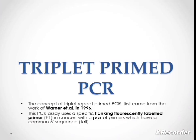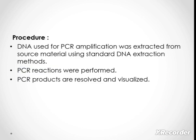Therefore, triplet primed PCR was used for the diagnosis. The concept of triplet repeat primed PCR first came from the work of Whartner et al. in 1996. This PCR assay used specific flanking fluorescent-labeled primers in concert with a pair of primers which have common five-prime tails.